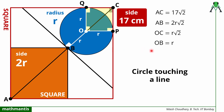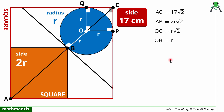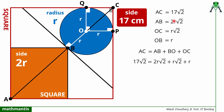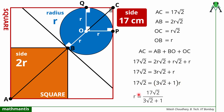Now we can find the value of r. We know the length of the diagonal and we can define the separate lengths AB, BO, and OC. So AC equals AB + BO + OC. Substituting: 17√2 = 2r√2 + r + r√2. Taking r common: 17√2 = r(3√2 + 1). Therefore r = 17√2 / (3√2 + 1). This is the radius of the blue circle — that is what we had to find.